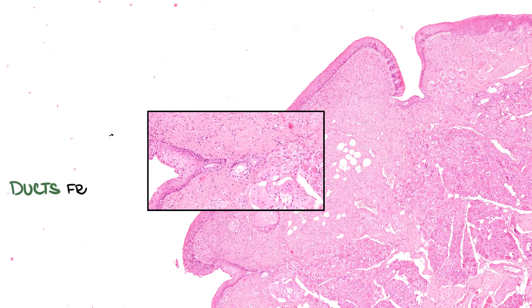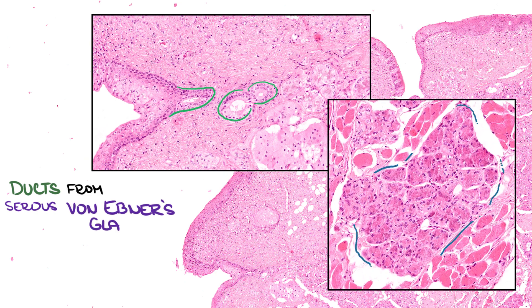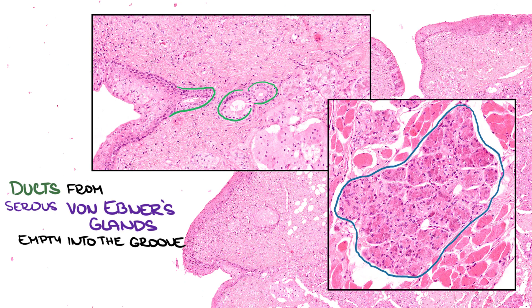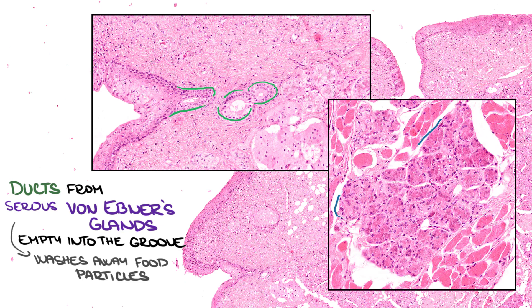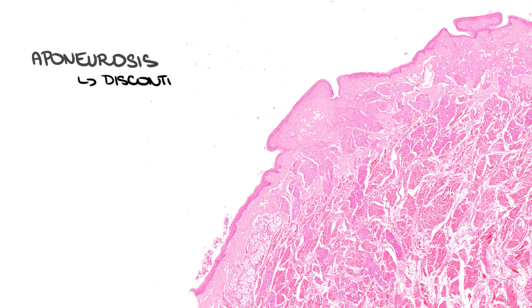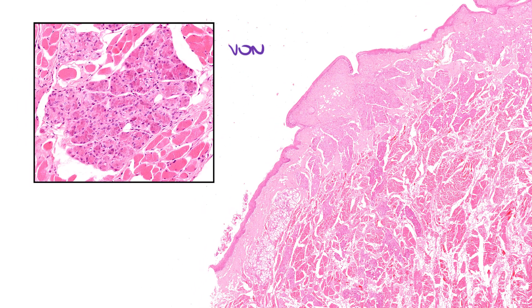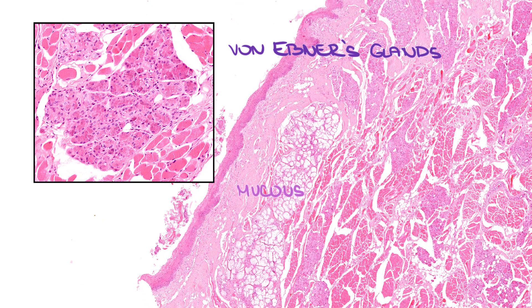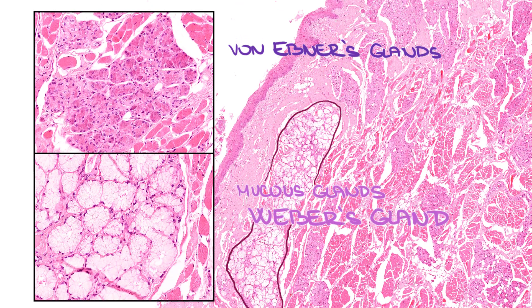Ducts from von Ebner's glands empty into the groove around these papillae, whose secretion washes away food particles. Thanks to this, taste buds can process new gustatory stimuli. The aponeurosis in this region is discontinuous because of the glands. Apart from von Ebner's glands, there are also mucous glands called Weber's glands, which function in clearing debris from the peritonsillar region.